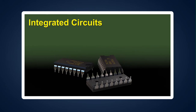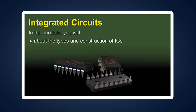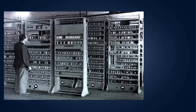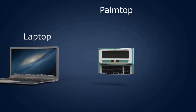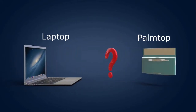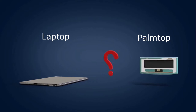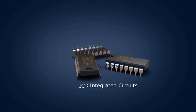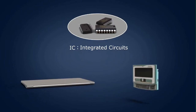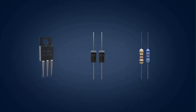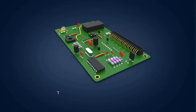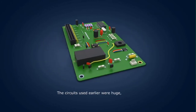In this module you will learn about the types and construction of ICs. Earlier the size of computers used to be very big; however, nowadays laptop computers and palmtop computers are available. The miniaturization of electronic gadgets was made possible by ICs — integrated circuits. Earlier, electronic circuits were prepared using transistors, diodes, and resistors joined with conducting wires, making them huge and bulky, and they were not reliable.